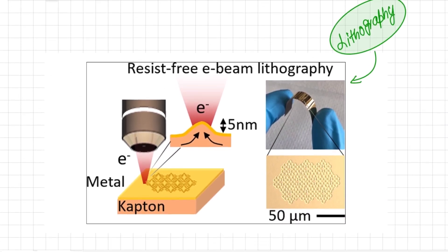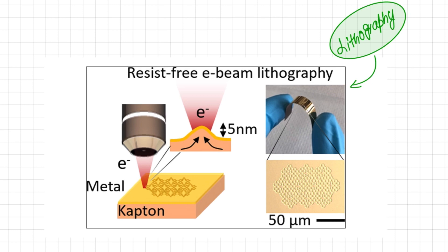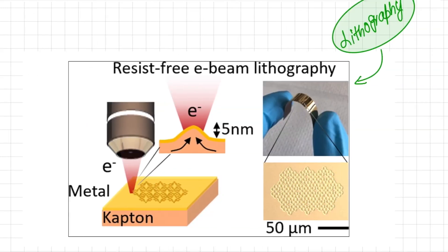A more complex top-down method is lithography. Lithography is a technique used to create patterns on a substrate at a nanoscale level. It involves either transferring a pattern from a mask or template onto a surface using light or electrons.